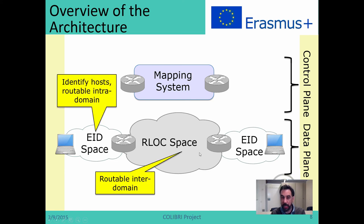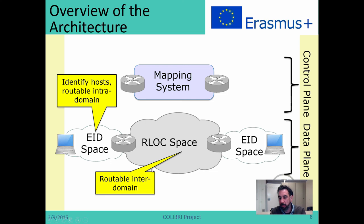On the data plane we have two different sets of IP addresses: EIDs and RLOCs. RLOCs are only used for inter-domain routing and only make sense in the inter-domain part of the internet. EIDs are used to identify hosts. You can think of it as: all the addresses currently in the inter-domain are somehow RLOCs, while the addresses we use today in our hosts are EIDs.